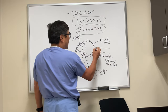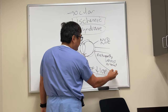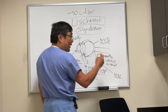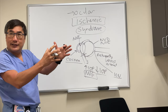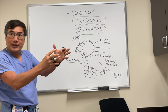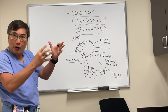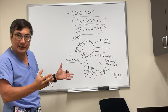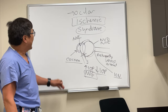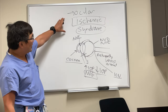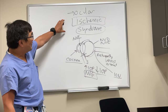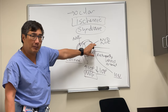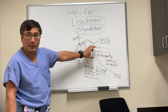Of course the optic nerve can be affected as an ischemic optic neuropathy — that can be an anterior ischemic optic neuropathy with a swollen disc, or a posterior ischemic optic neuropathy where the disc isn't swollen or is just pale.